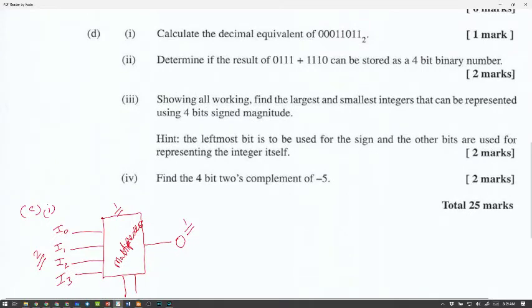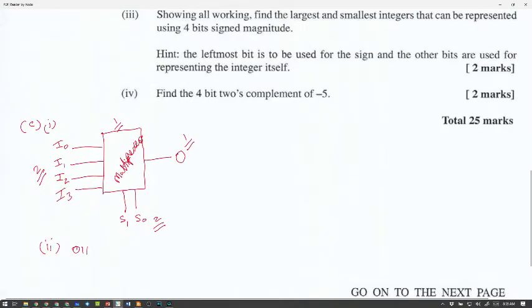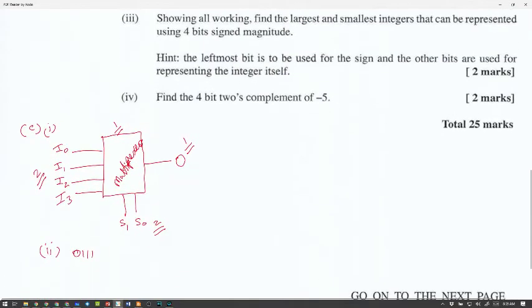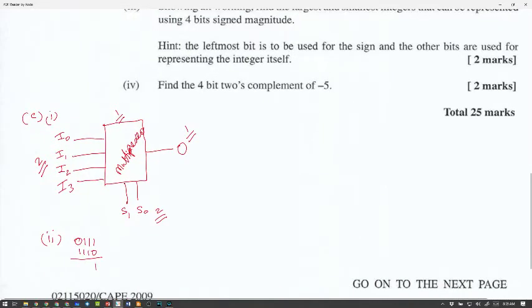Part D. Determine the result of 0111 plus 1110 if it could be stored as a 4-bit binary number. So, you have to add them. 0, 1, 1, 1 and then 1, 1, 1, 0. 1 plus 0 is 1. 1 plus 1 is 0, carry 1. 1 plus 1 plus 1 is 1, carry 1. 1 plus 1 is 0. So, again, 5 bits.